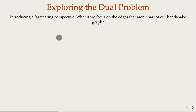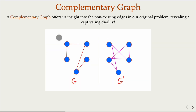In mathematics, there is often a concept called a dual problem, seen in both optimization and graph theory. In our case, we explore this by focusing on the edges that are NOT part of the handshake graph. This leads to the concept of a complementary graph: the complement of graph G makes connections wherever the original graph has none, and has no connection wherever the original does. They are complementary to each other.